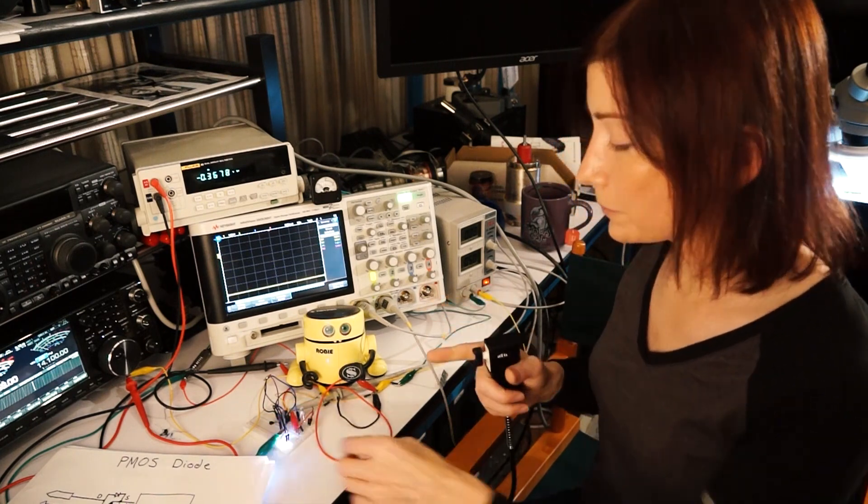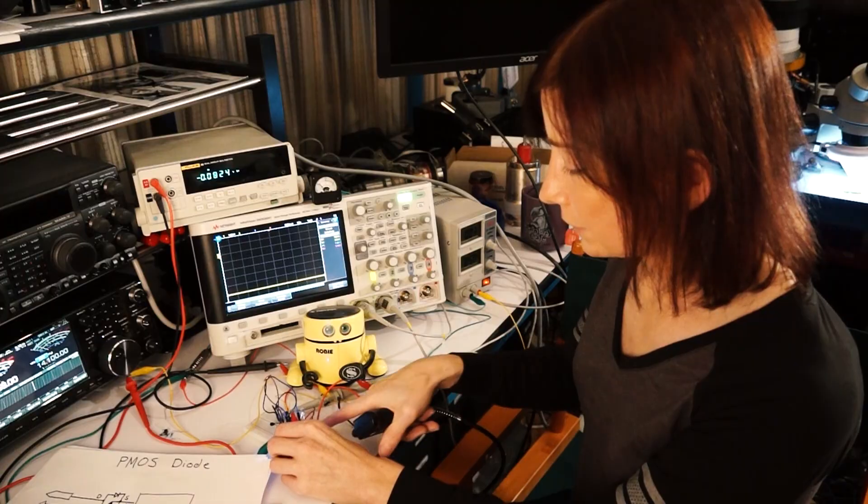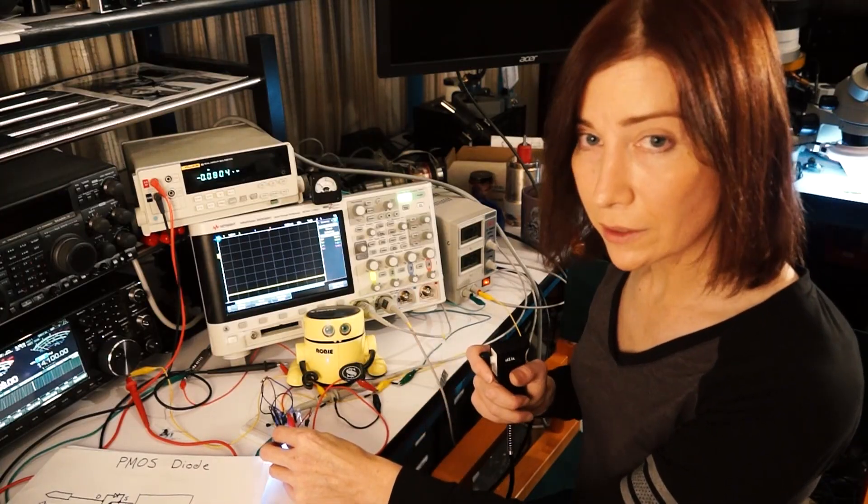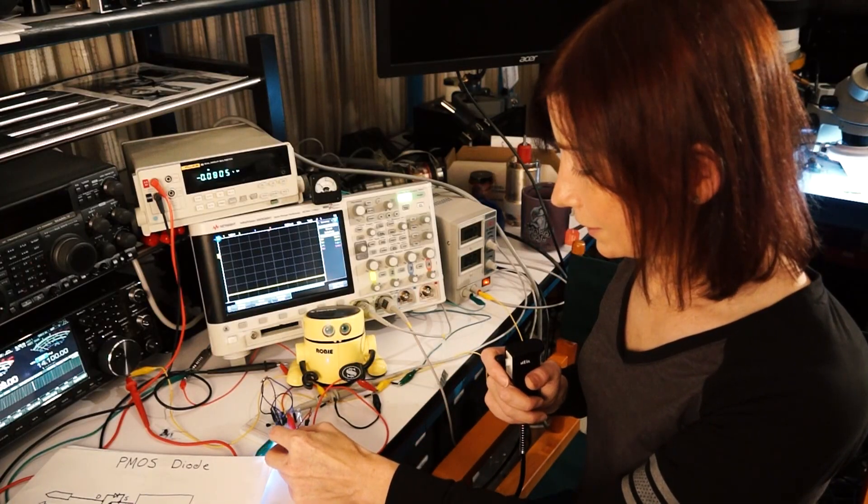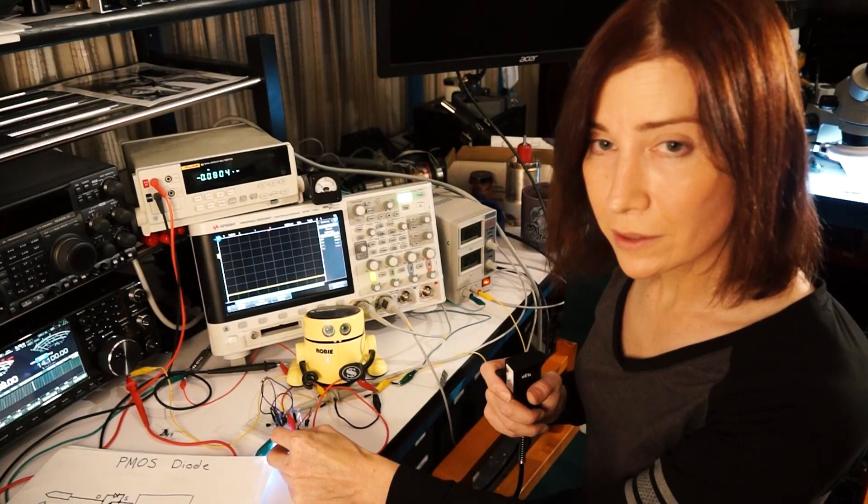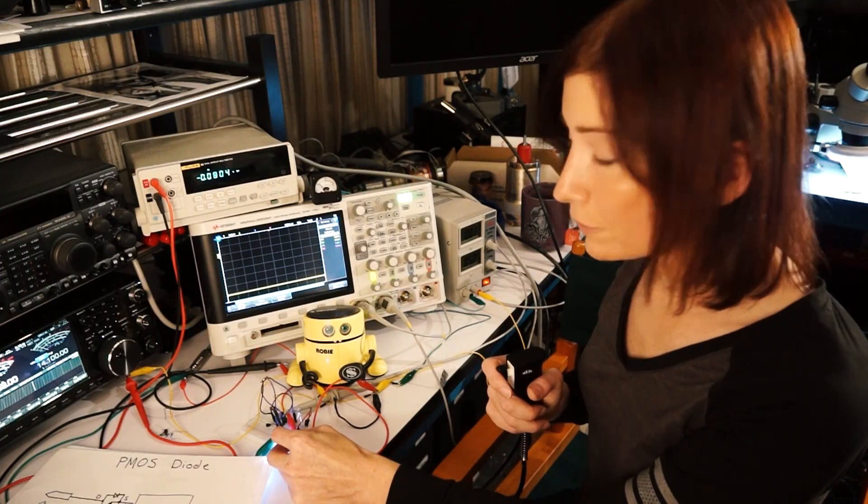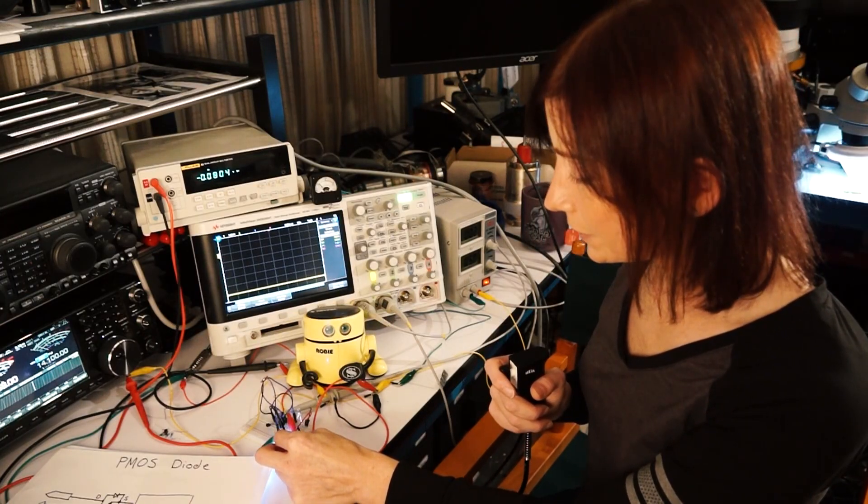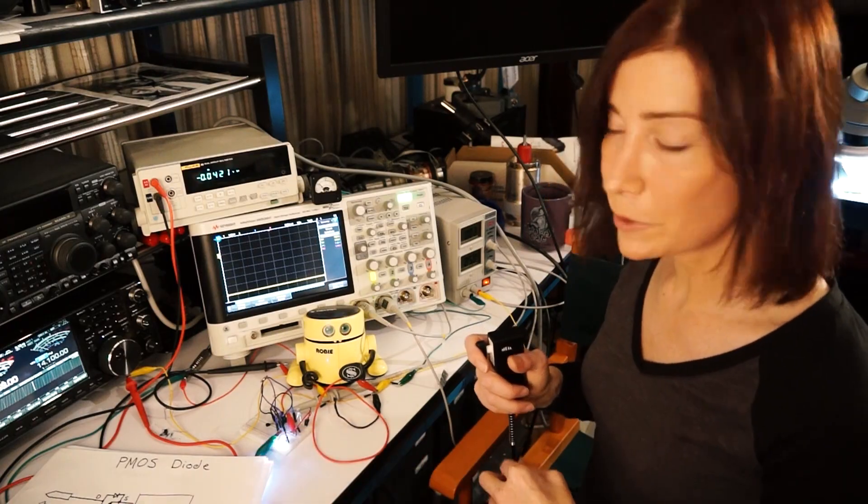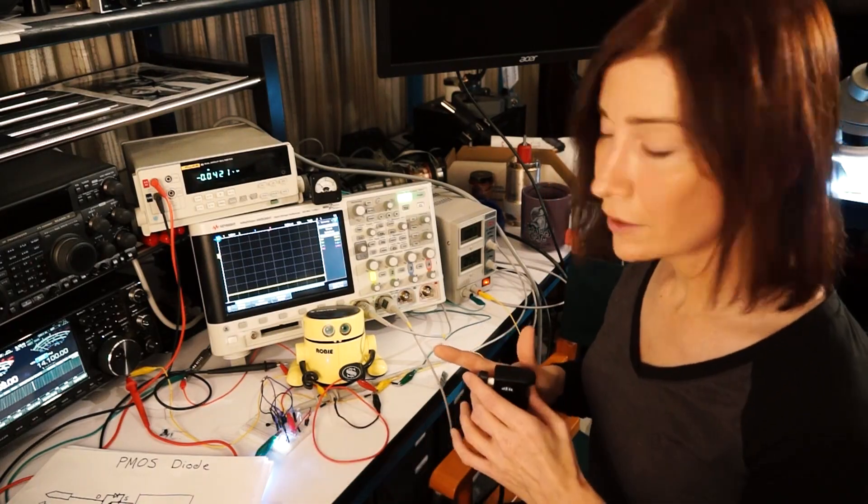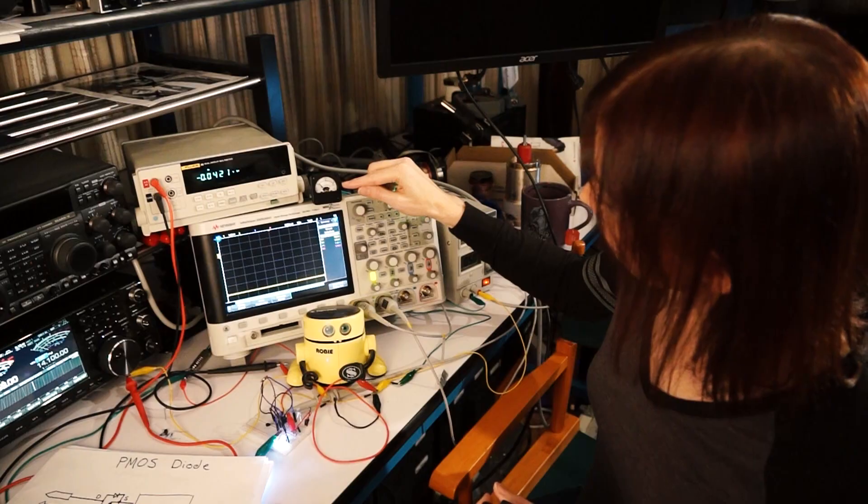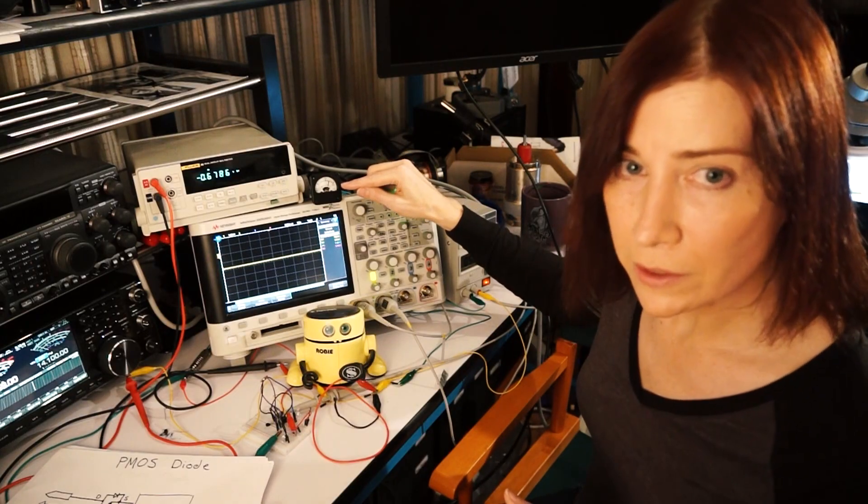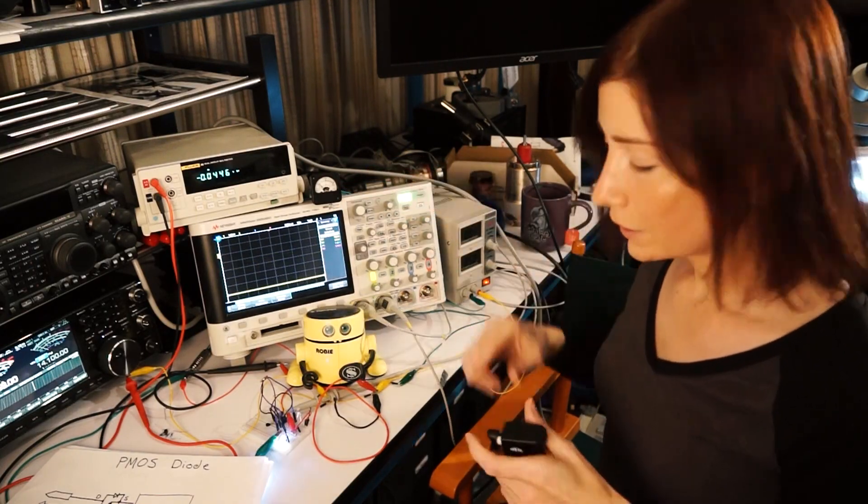I put a jumper on here that I can put in that will cut the shunt resistor value in half, which should double the current that we see when it's in current limit mode. So, now I just installed the shunt. Let's take a look at it. Yep, about double the current.